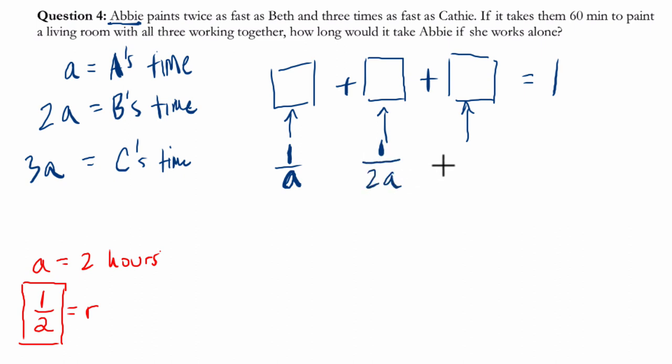And then the same for Beth, and the same for Kathy. Put them together, and they do complete one room. And then I just solve for A.